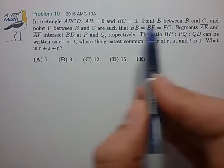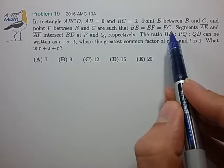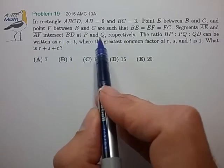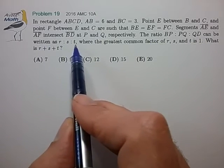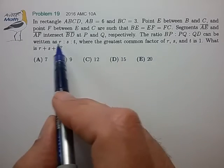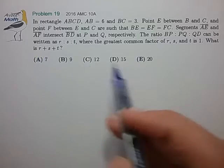Point E between B and C, and point F between E and C are such that BE equals EF equals FC. Segments AE and AF intersect BD at P and Q, and the ratio BP to PQ to QD can be written as r to s to t, where the greatest common factor is 1. What is the sum r plus s plus t?